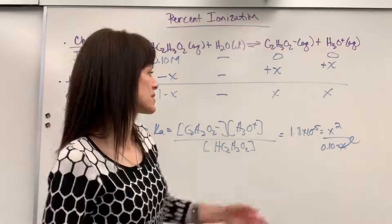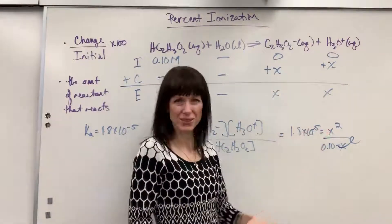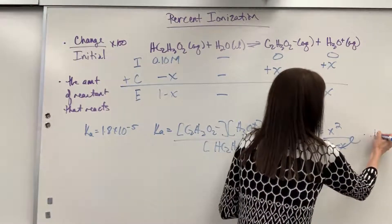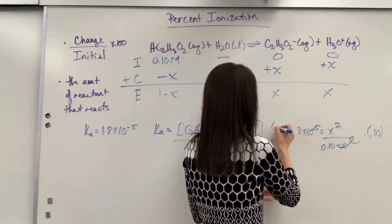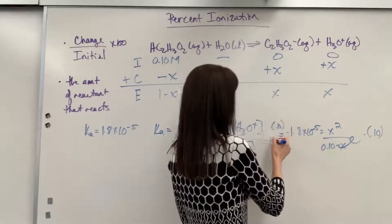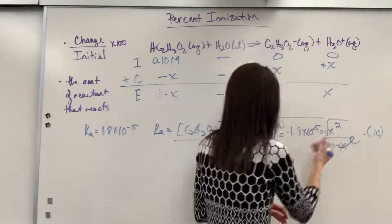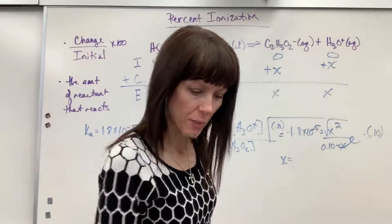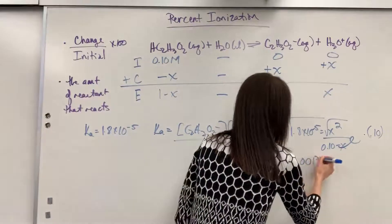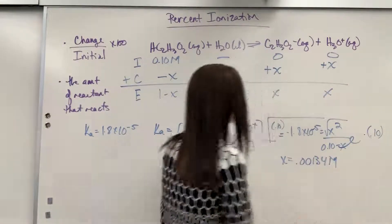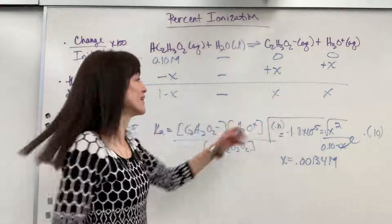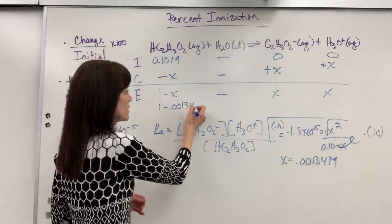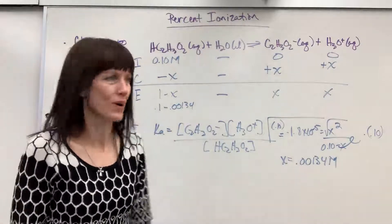So now we can solve for x. I'll multiply both sides by 0.1 and then take the square root. So let's do that. I'm going to go times 0.10 and then I'm going to take the square root of that whole thing. We are going to get x equals 0.00134. And that's molar. So I have that right here. I'm going to have the 0.1 minus 0.00134. Subtract that. It's still just going to be 0.1.